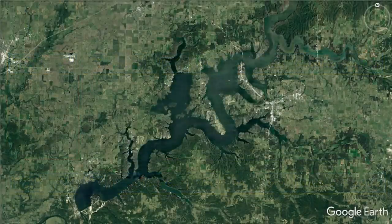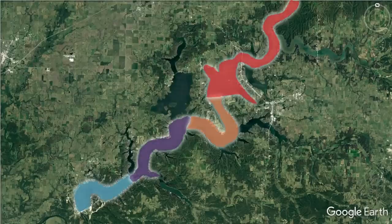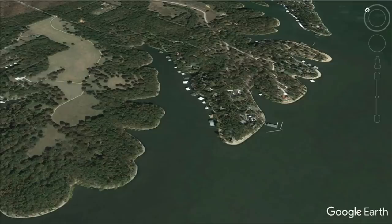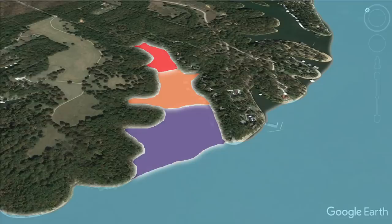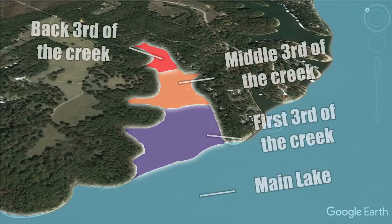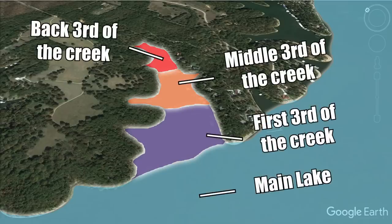Looking at a lake map, the first thing I do is break the lake into one-to-two-mile sections. I find that bass will set up differently in different water depths, different types of cover, and even feed on different forage in each section — dependent on water clarity, water temperature, current, and more. Then you can go into any single section and break it into different areas. In a creek, for example, you might have the main lake portion, the first third of the creek, the middle of the creek, and the back of the creek.